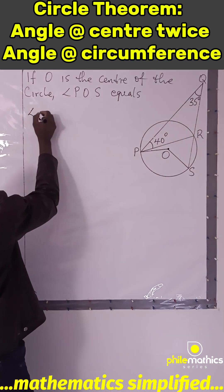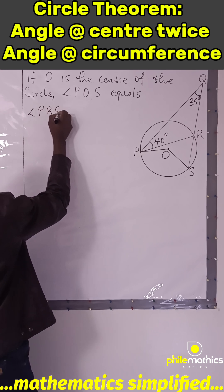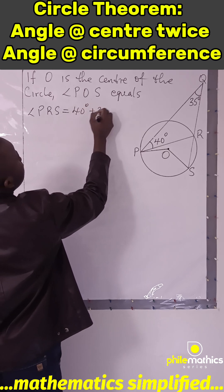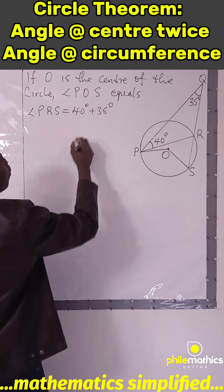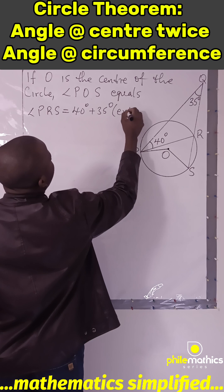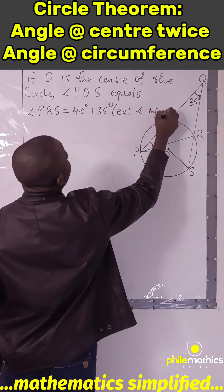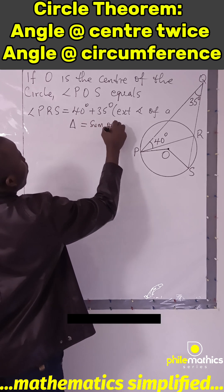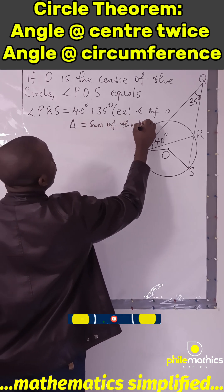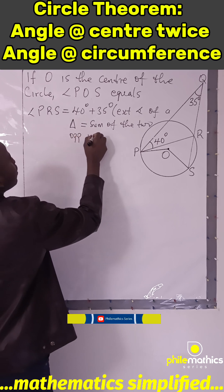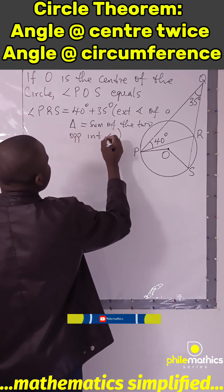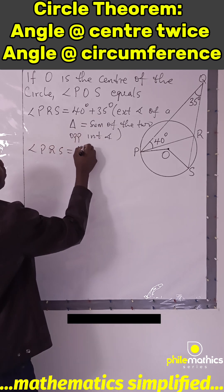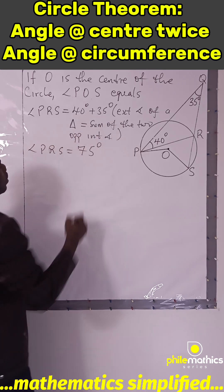So angle PRX should give me 40 degrees plus 35 degrees, because the exterior angle of a triangle equals the sum of the two opposite interior angles. And so, angle PRX will give me 75 degrees.